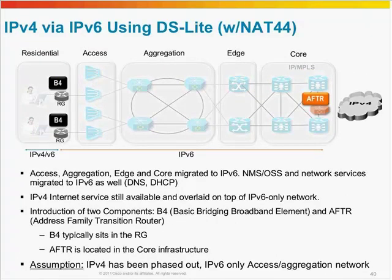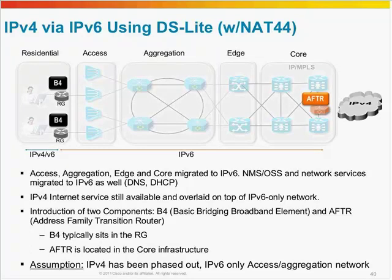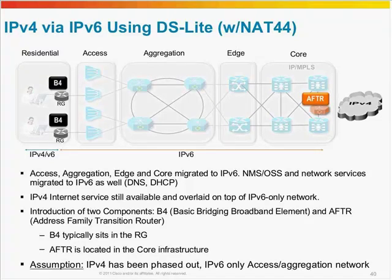Now with IPv4 via IPv6 using DS-Lite: this is totally the opposite of what we just discussed. The assumption here is that the whole access aggregation, edge, and core network is all IPv6 enabled. You're introducing two new components: at the RG, you have the component called B4 — Basic Bridging Broadband element — and AFTR — Address Family Transition Router. This is the situation where service providers have dual-stacked devices at the RG site and want to still provide IPv4 internet access. They tunnel all this traffic — bypassing all the IPv4 infrastructure — terminating it on the AFTR to provide that IPv4 internet access to residential gateway customers. The assumption here is that IPv4 has been phased out and IPv6-only access and aggregation network exists.